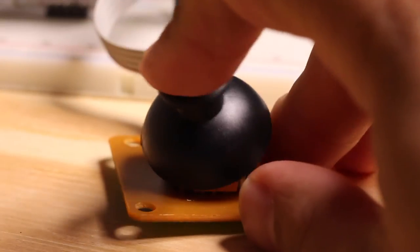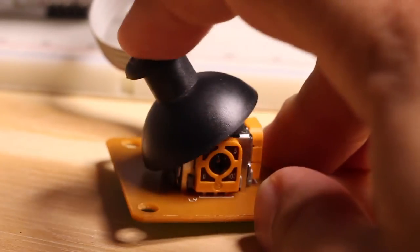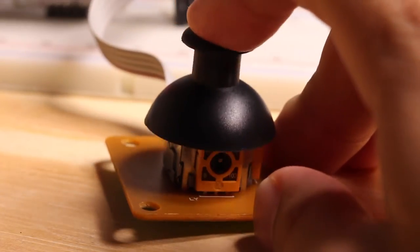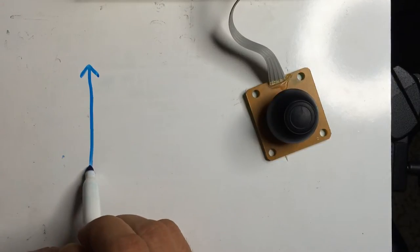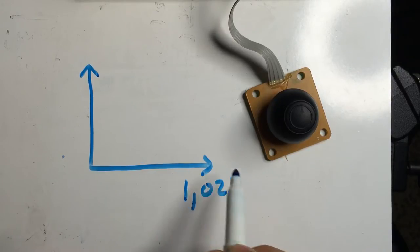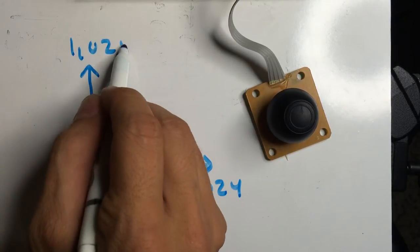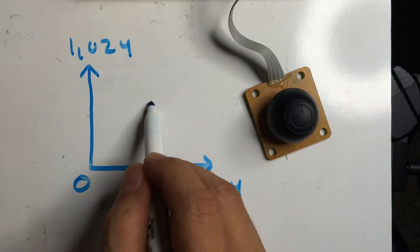This joystick is basically two potentiometers that give analog readings that the Arduino can read. Using the analog pins on the Arduino, it can read 0 to 1023—I accidentally wrote 1024 right here but it's actually 1023. It makes these readings by looking at the two analog pins.